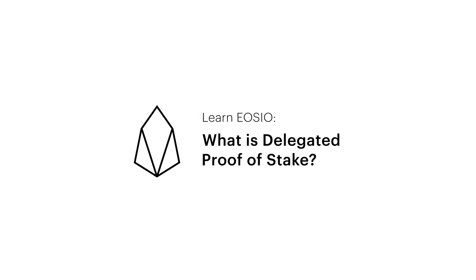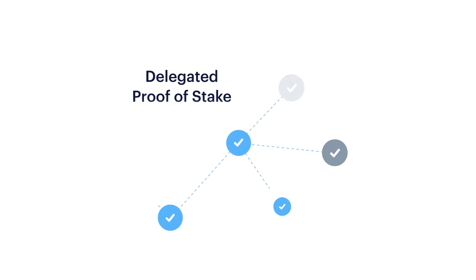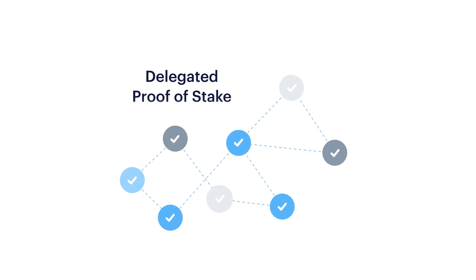What is delegated proof-of-stake? Delegated proof-of-stake is EOSIO's consensus model.